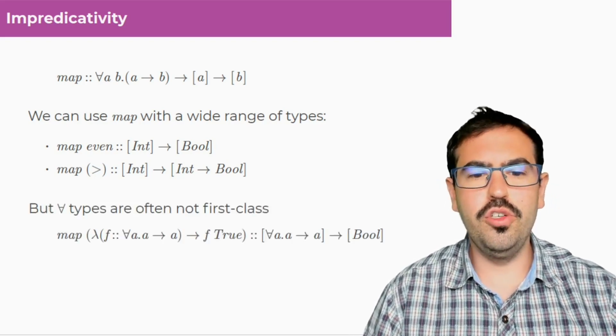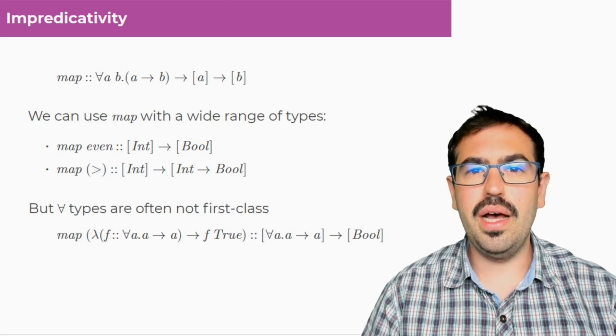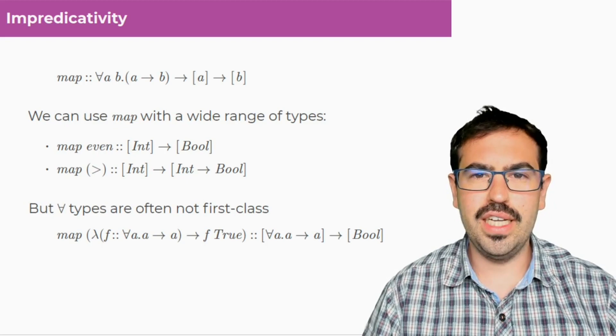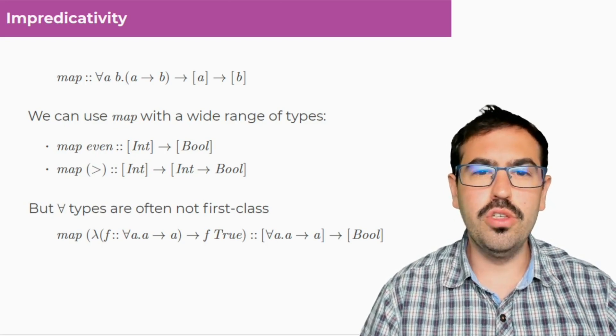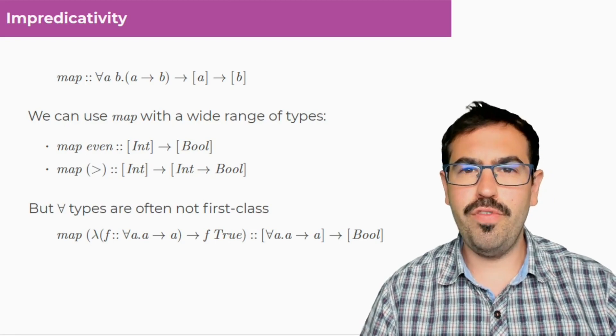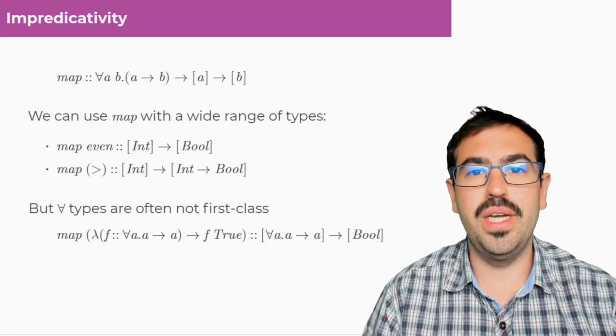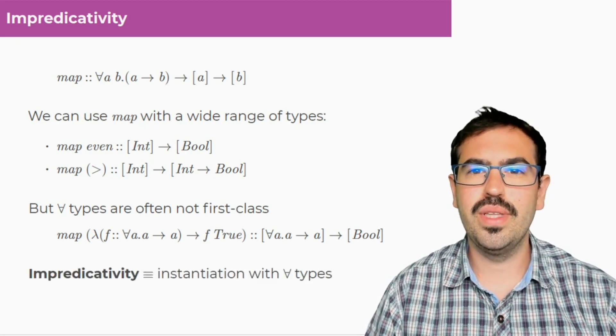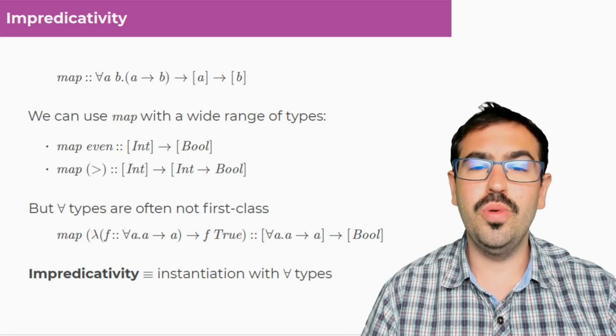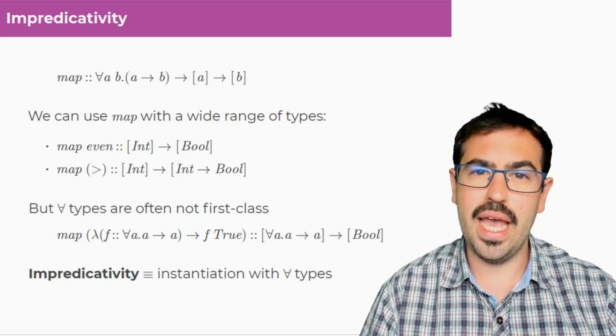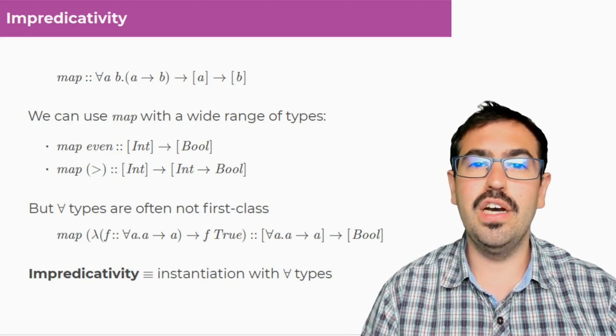But if now we want to use map with this function, which takes an argument which itself has a polymorphic type, in many cases we cannot really use this. Polymorphic types, those types with a for all, are often not first class in many programming languages. Impredicativity is exactly the feature that allows you to instantiate a type variable like a or b in map with a polymorphic type, a type which has a for all on the front.